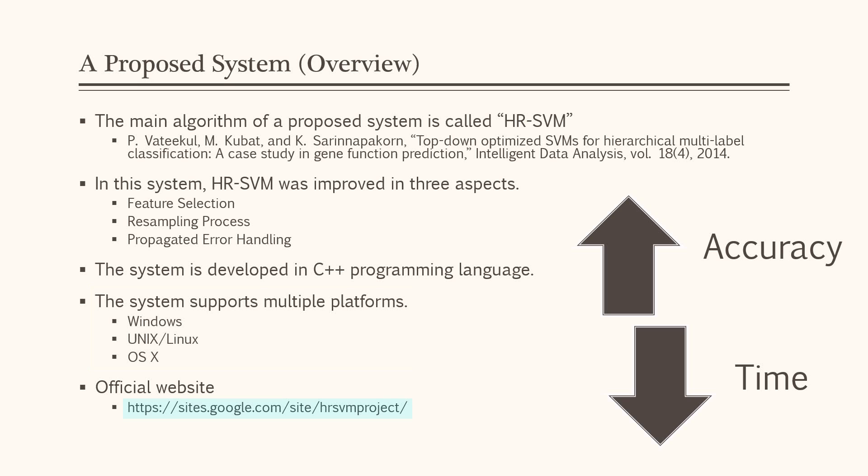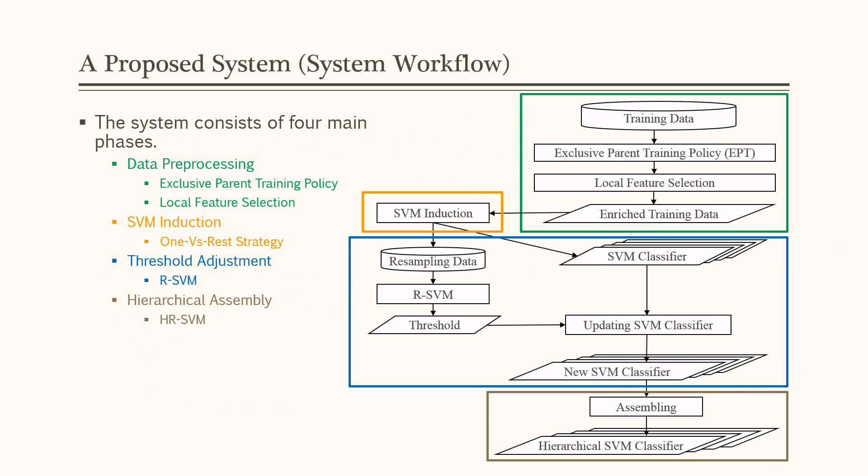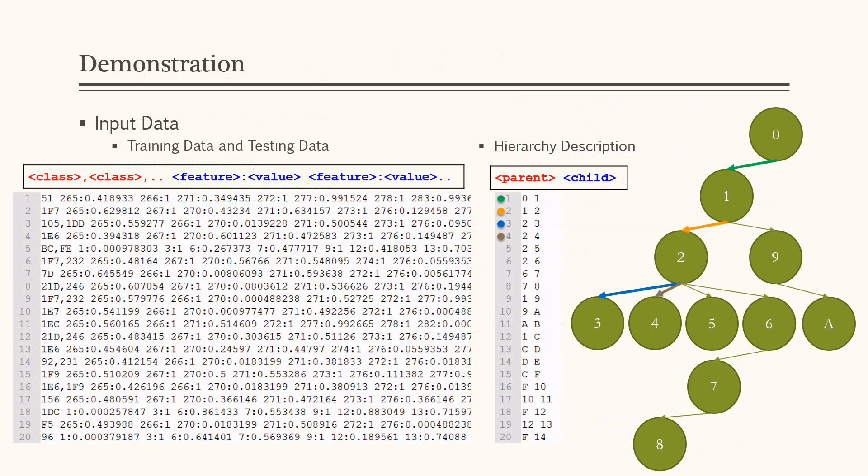For more information, please visit the official site at HRSVM Project on Google Sites. The system consists of four main parts: data preprocessing and feature extraction from training data; SVM induction constructs classifier with one-versus-rest strategy; to reduce imbalance problems, enhanced version of SVM threshold adjustment algorithm is available; assembling process allows system to support hierarchical classification.